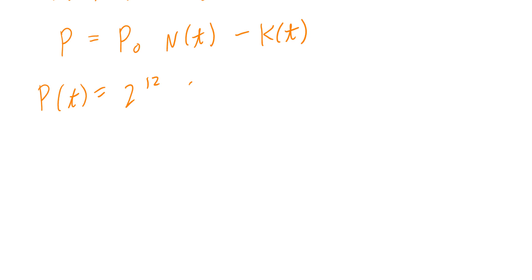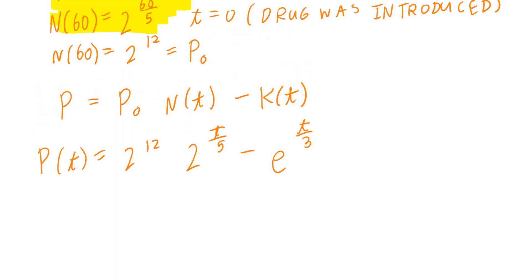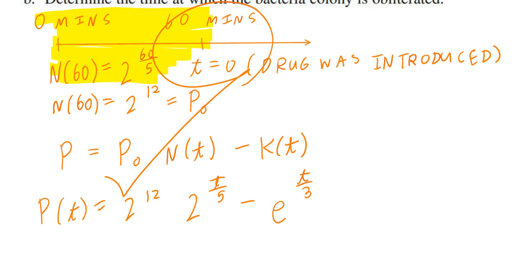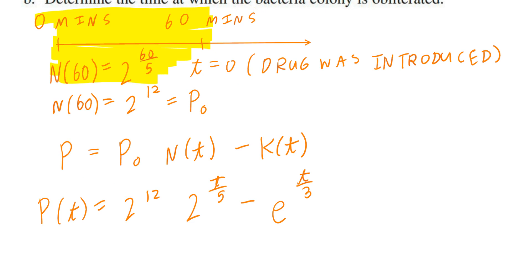There's a growth rate, which is 2 to the power of t divided by 5. And as this is happening, the drug was introduced, so you're subtracting — you're destroying this population by e to the power of t divided by 3. So the population P of t, where time equals zero after 60 minutes, equals the initial population 2 to the power of 12, times the growth rate 2 to the power of t divided by 5, minus e to the power of t divided by 3.